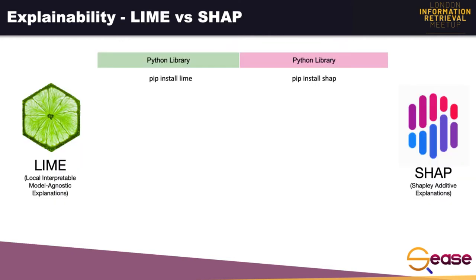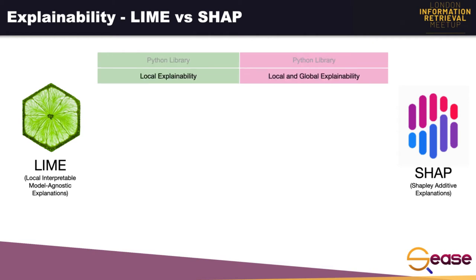Now I will make a brief comparison between two of the most popular methods: LIME and SHAP. LIME is often compared to SHAP, but there are important advantages and disadvantages between them. They are both Python libraries, easy to install and to use. As suggested by the name, LIME explanations are only local, while SHAP allows for both global interpretability and local explainability.